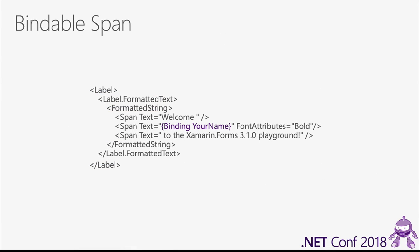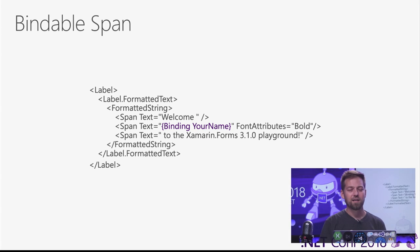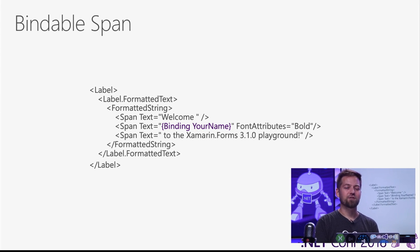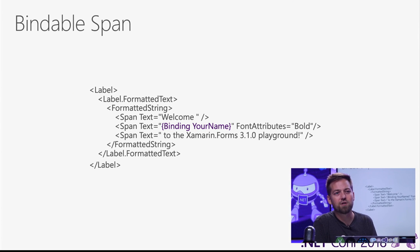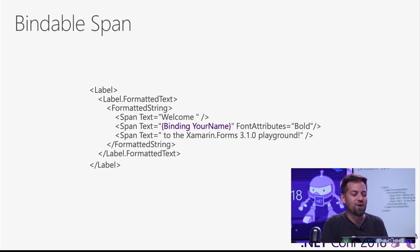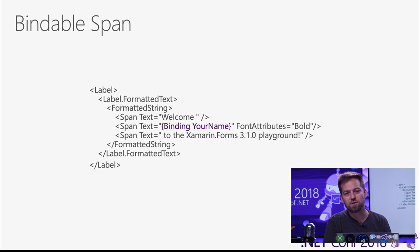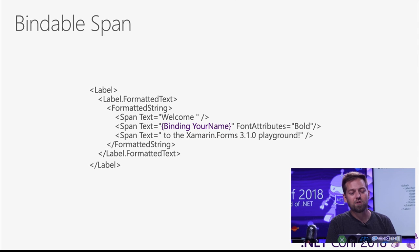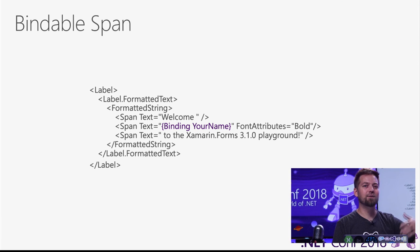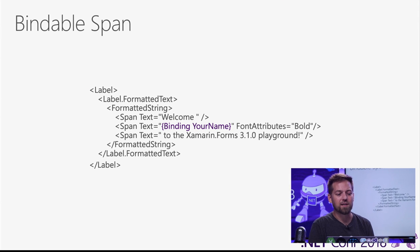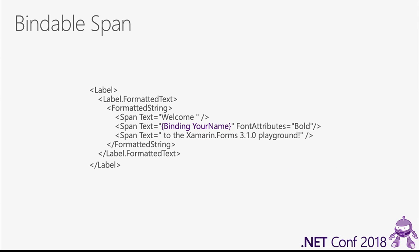Bindable spans — Adam Pedley contributed this. A customer mentioned that using formatted text in labels was a huge performance boost on Android, because if you can replace three labels with one label, you're not inflating all those extra views. But once you start using formatted text, you want to bind into those spans. Now that's available. Thank you, Adam — I think everybody will get a lot of use out of that.